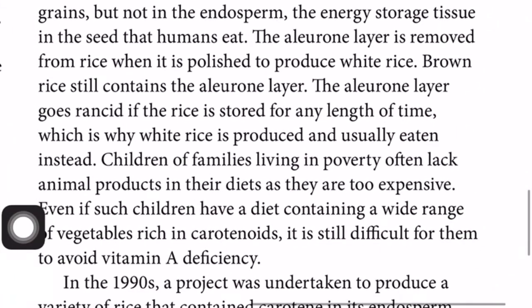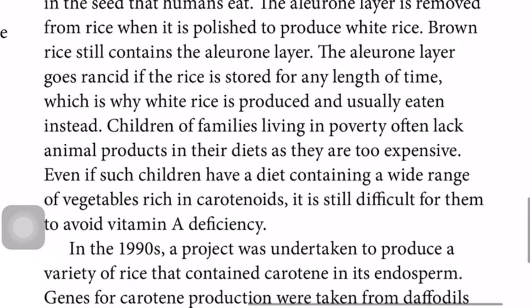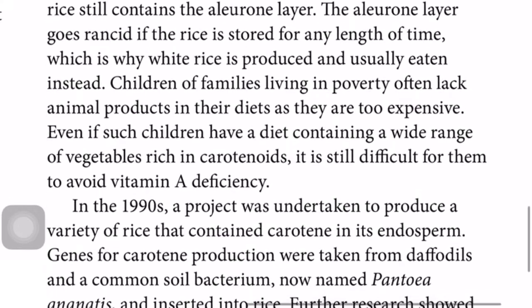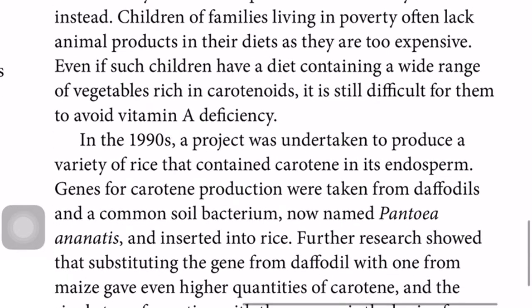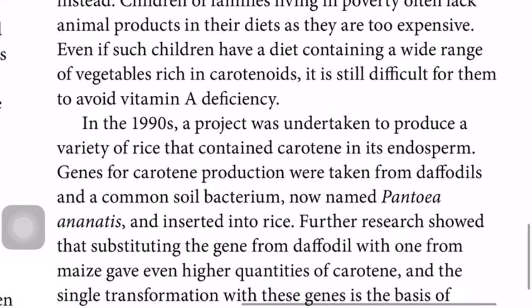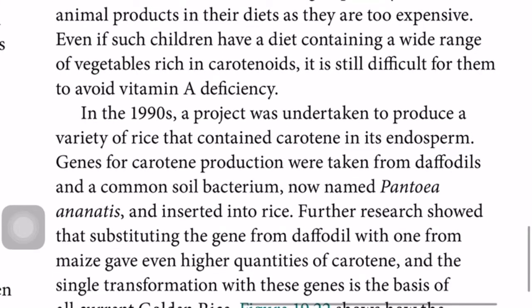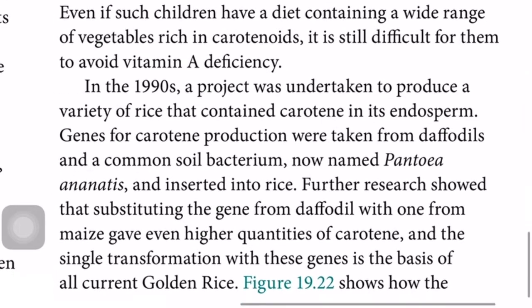The aleurone layer is removed from rice when it is polished to produce white rice. Brown rice still contains the aleurone layer, but the aleurone layer goes rancid if rice is stored for any length of time, which is why white rice is produced and usually eaten instead. Children of families living in poverty often lack animal products in their diet as they are too expensive, making it difficult to avoid vitamin A deficiency even with a wide range of vegetables.